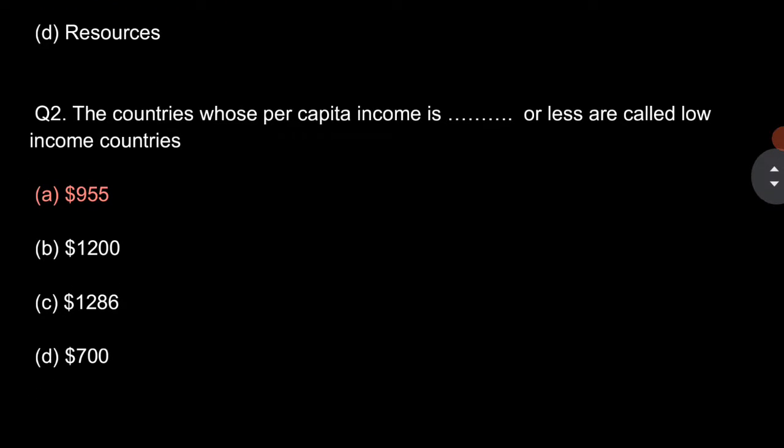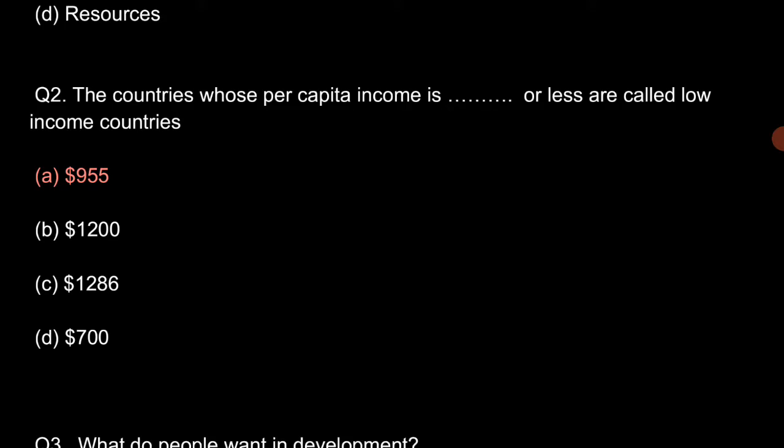Question number 2: The countries whose per capita income is less than a threshold are called low income countries. So, the first option is correct, that is $9.55.